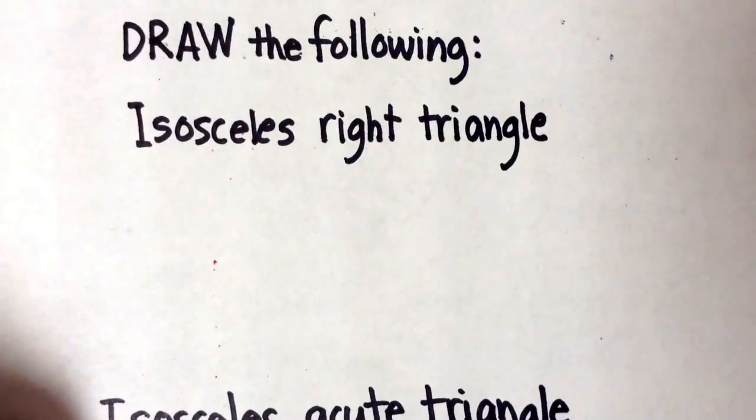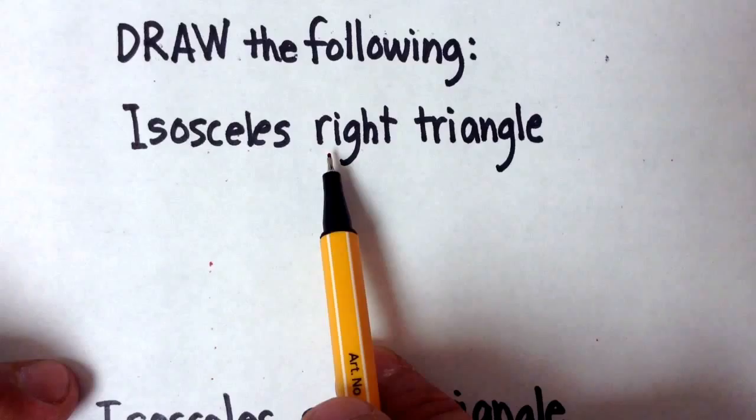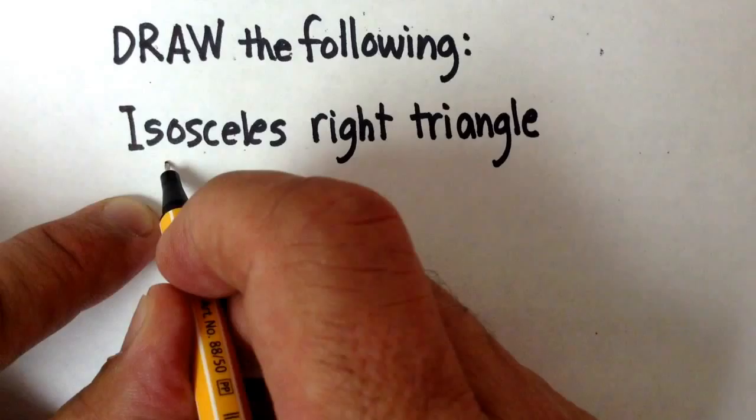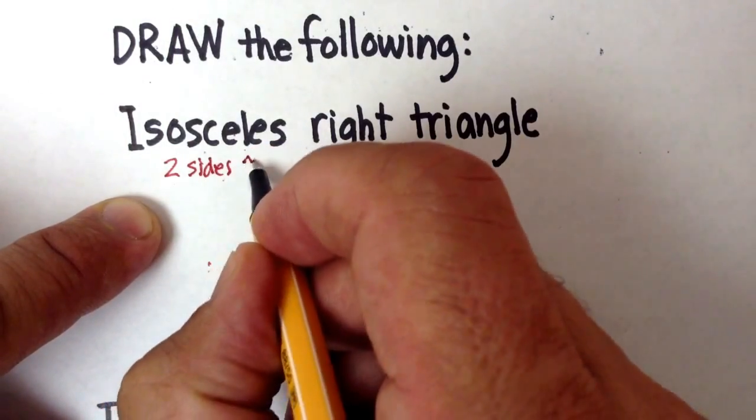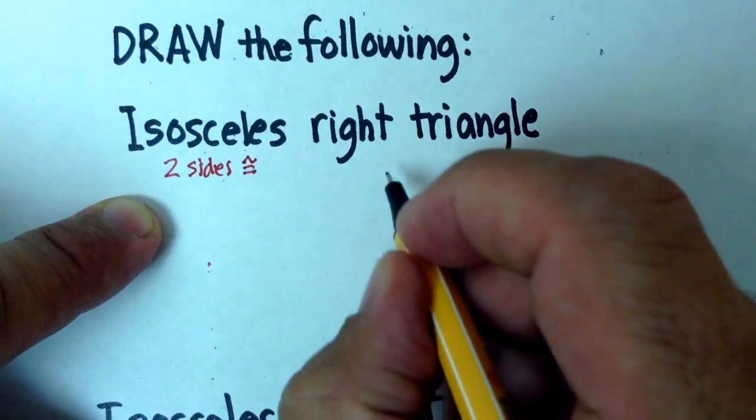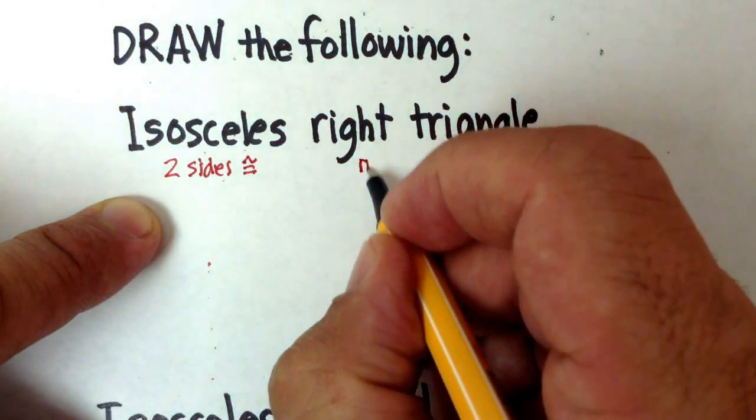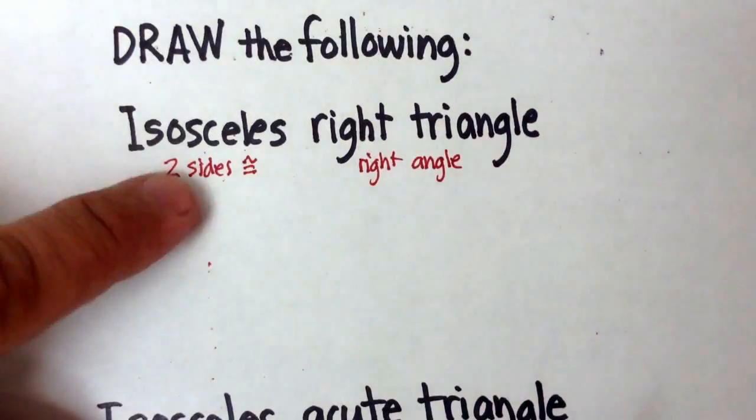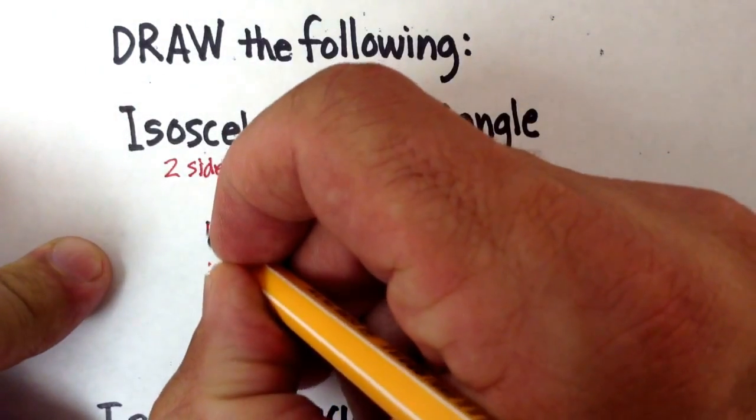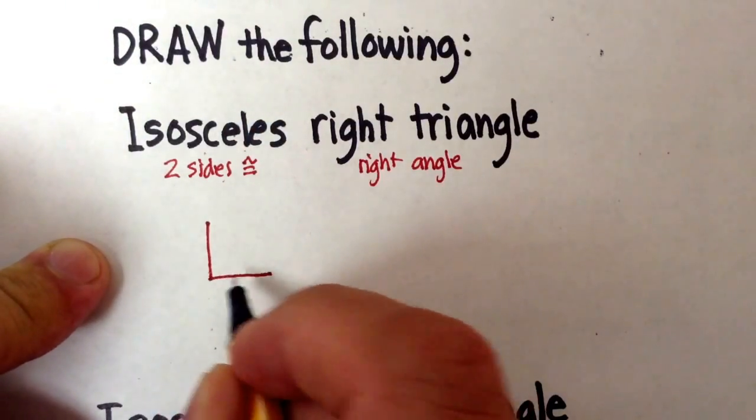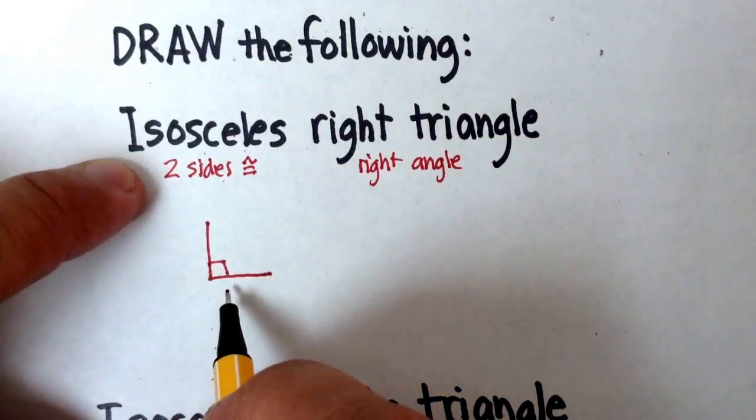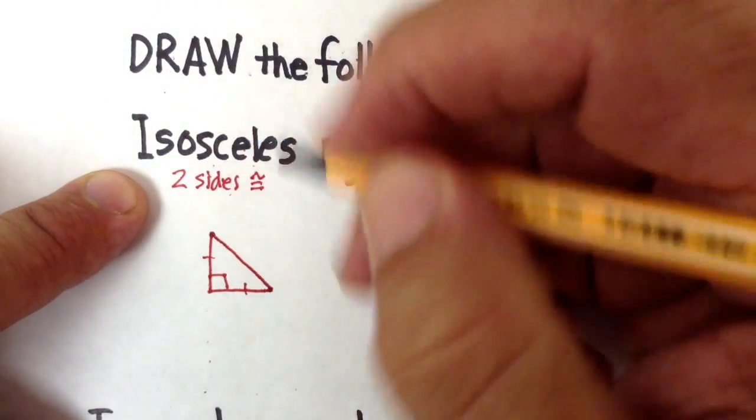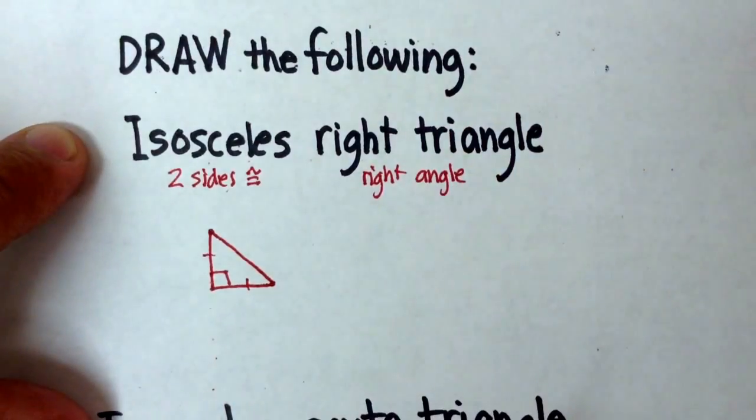So the first thing I want you to try to do is to draw an isosceles right triangle. So let's take this apart. Isosceles means that there are two sides that are congruent. And a right triangle means that it has a right angle or a perpendicular. So how will we draw an isosceles right triangle? Well, let's draw the right part first, and then let's make sure that each of the legs are congruent. So we'll just say that this is equal to that, and now we just connect up. So I've just drawn an isosceles right triangle.